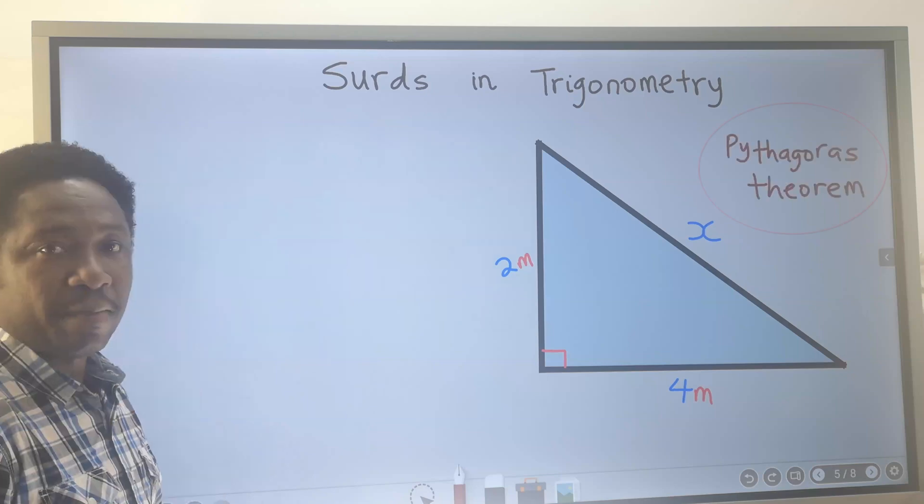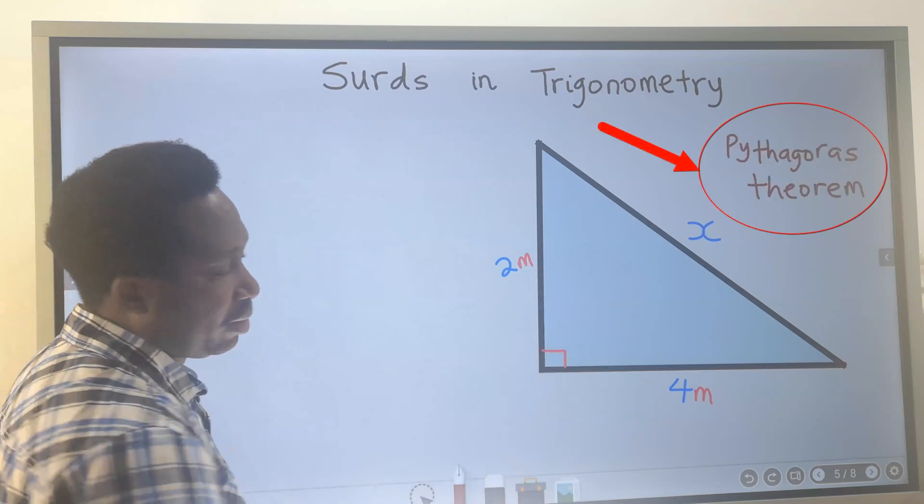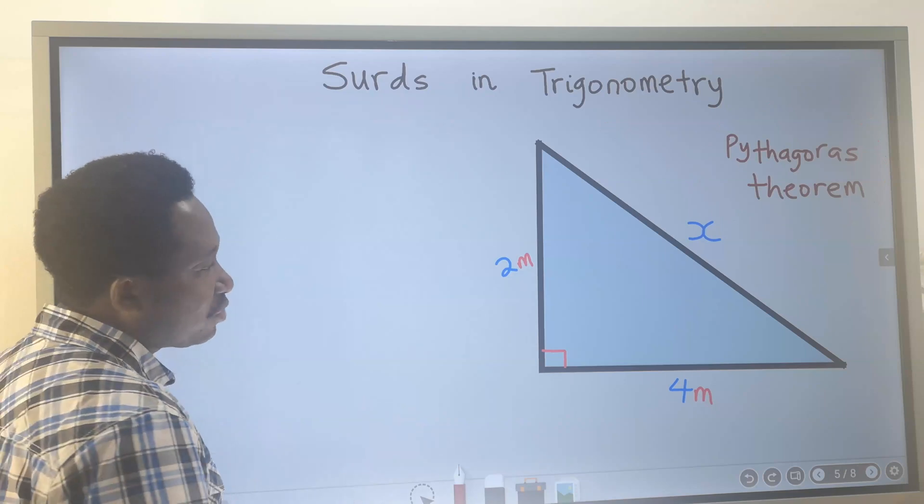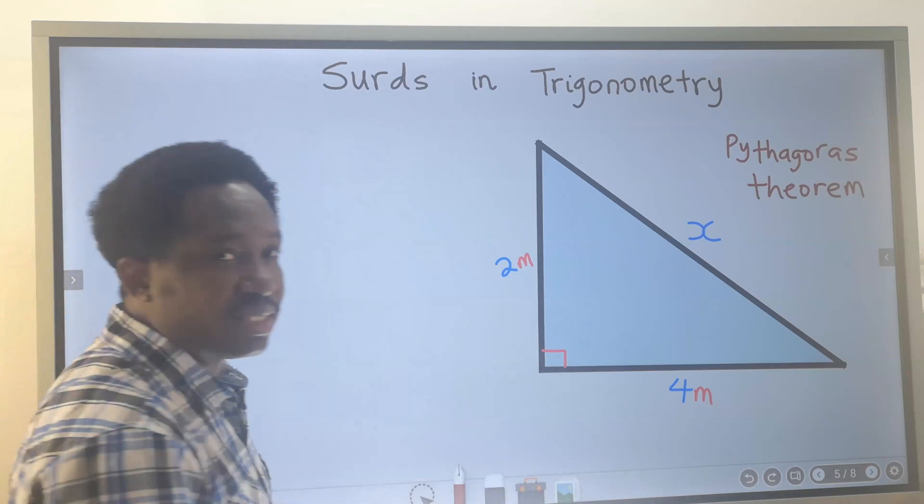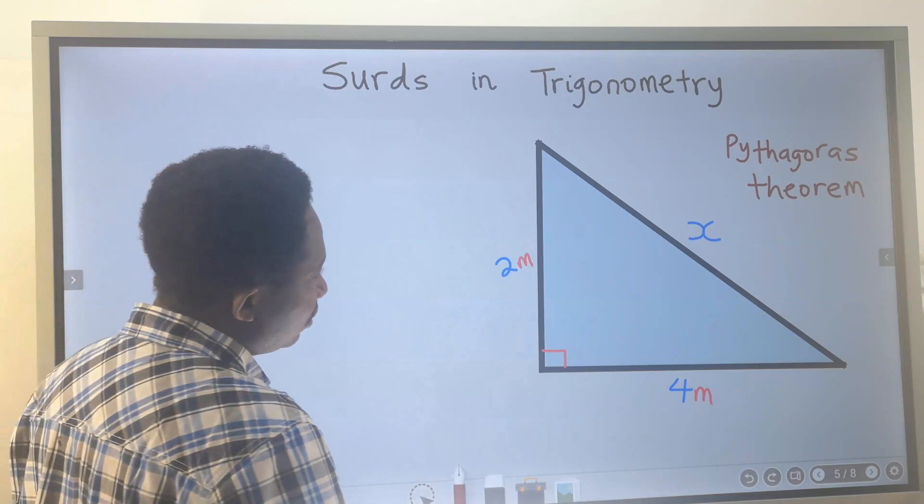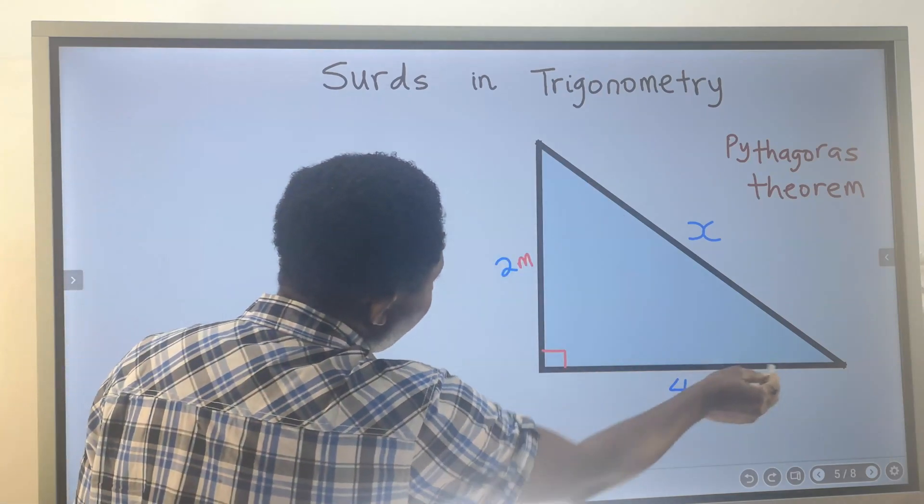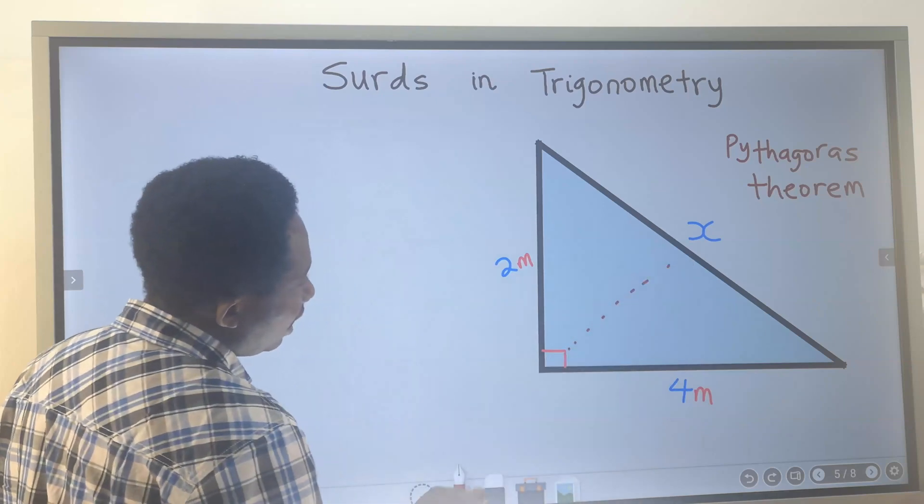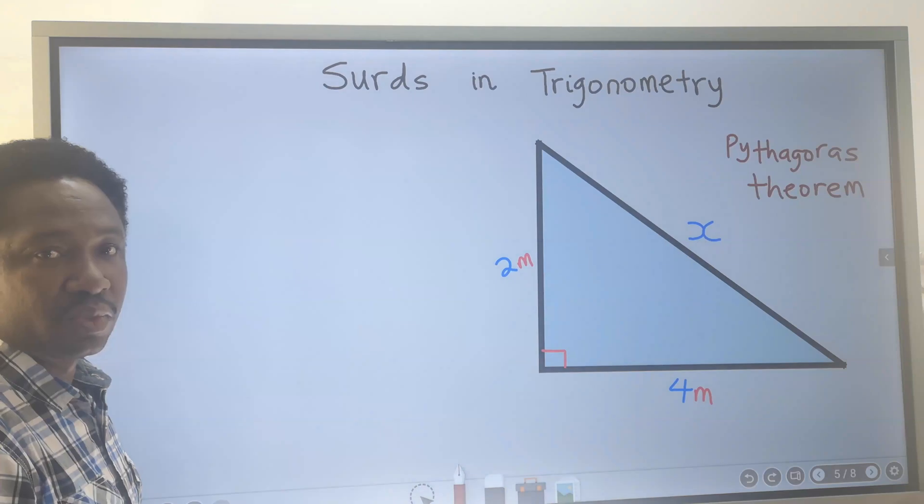we apply Pythagoras theorem. This theorem states that we have to identify the longest side of the right angle. The longest side of the right angle is the side that is facing the right angle. And here, it is x.